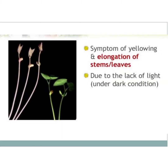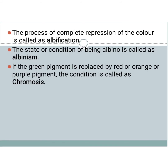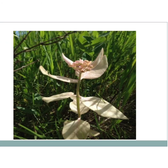You can see chlorosis in this picture — yellowing of the leaves where the green pigment is completely replaced by yellow color. You can see etiolation in this picture: due to lack of light this condition occurs, with yellowing and elongation of stem and leaves. Albinification is the complete repression of color — there will be no color. The state of being albino is albinism. Chromosis means the green pigment is replaced by some other colors such as red or orange.